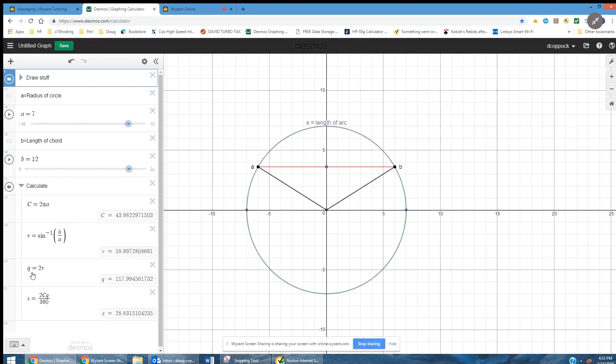And I've calculated the circumference of that circle. I found the inverse sine of one of these angles and evaluated twice the angle. And there's the formula that we had over there. So it looks like the answer to the problem posed on Wysandt was 28.83 units.